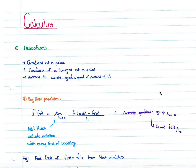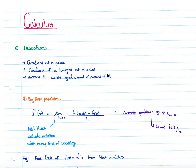We can use that gradient to find the gradient of a tangent at a point. When we refer to the normal to a curve, it is simply the gradient at that point times the gradient of the normal equaling negative one, as your normal is perpendicular to your curve at that point.